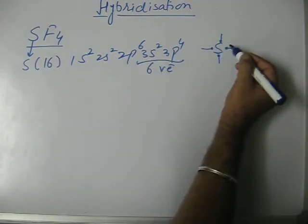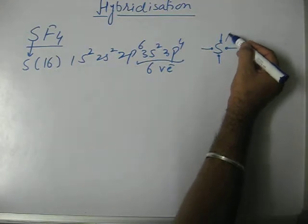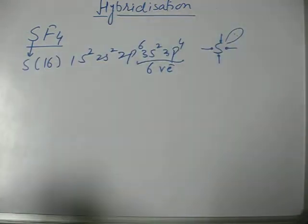Out of six, four are used to form covalent bonds with fluorine, and therefore one lone pair is left on sulfur.